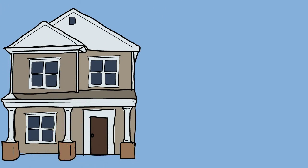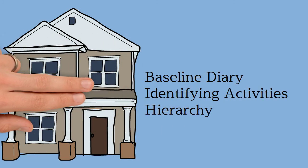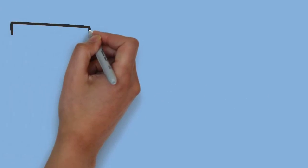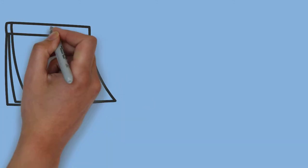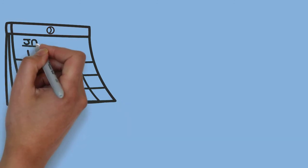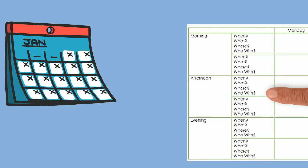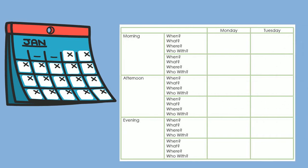The patient would then complete the hierarchy as homework. It's very important that before moving to the next step, the patient has completed and has a good knowledge of all previous tasks — the baseline diary, identifying routine, necessary and pleasurable activities, and ranking them on a difficulty hierarchy. Once they have a list of activities ranked by difficulty, you can start planning them in, but first recap the rationale for behaviour activation, trying to elicit this from the patient collaboratively.